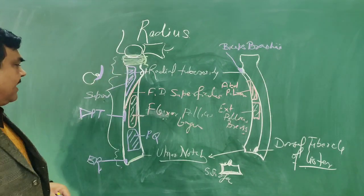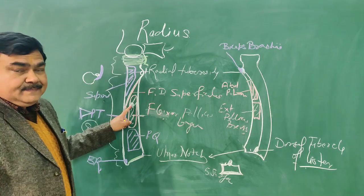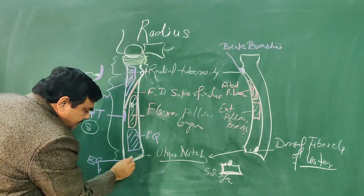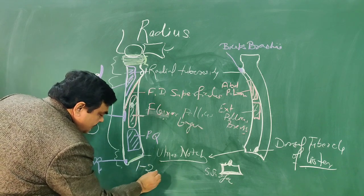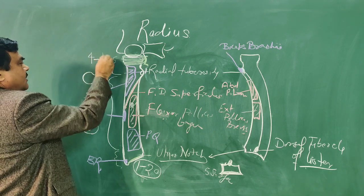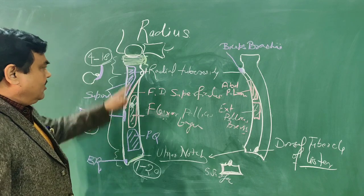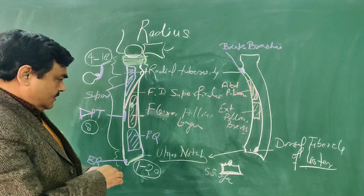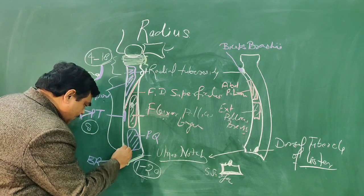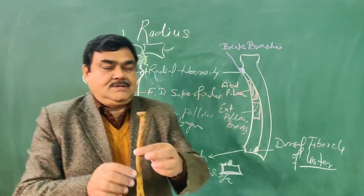The radius bone ossifies from one primary center, which appears during intrauterine life. There are two secondary centers: one for the lower end, which appears during the first year of life and fuses at the 20th year; and one for the upper end, which appears during the fourth year of life and fuses with the neck at the 10th year.